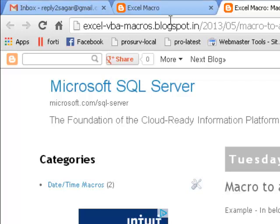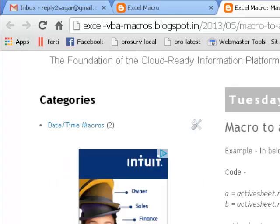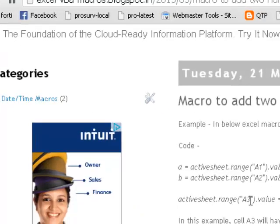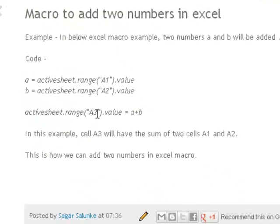Hello and welcome to excel-vba-macros.blogspot.in. In this video I am going to show you how you can add two numbers in Excel macro. So suppose I want to add the values that are in cell A1 and A2.